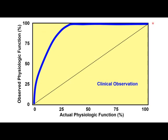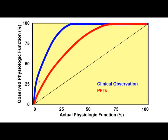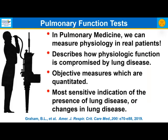That curve would look very different than the ideal clinical observation. Pulmonary function testing improves our ability to assess actual physiologic function — one can lose some physiologic function without us detecting it, but we can start to detect the fall in function earlier and more accurately than with clinical observation alone. In pulmonary medicine, we can measure physiology in real patients. Pulmonary function testing describes how physiologic function is compromised by lung disease; they're objective measures which can be quantitated and are the most sensitive indication of the presence or change of lung disease.